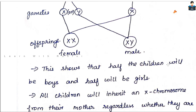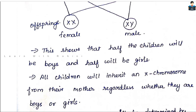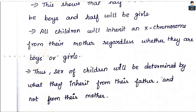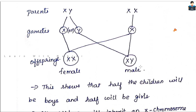This shows that half the children will be boys and half will be girls. All children will inherit an X chromosome from their mother, regardless of whether they are a boy or a girl. Mother always contributes an X chromosome. The sex of the children will be determined by what they inherit from their father — if they inherit X from the father, the child is female; if they inherit Y, the child is male.